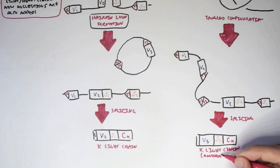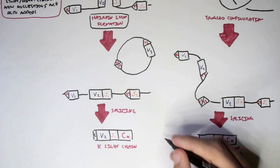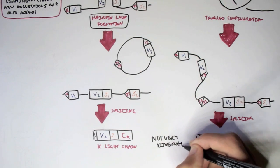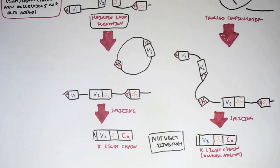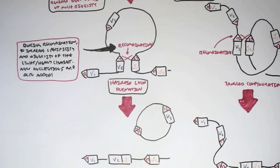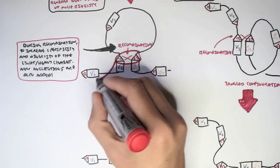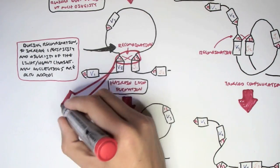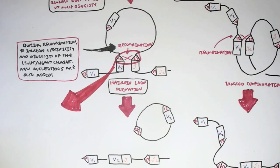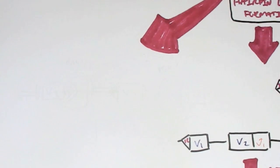As mentioned, the heavy and light chain genes have up to 40 variable segments and up to 5 joining segments. Mixing these alone would not create sufficient antibody diversity. That is why, during recombination, new nucleotides are randomly added, increasing both the diversity and specificity of antibodies. We will now look at the proteins involved in this recombination process.